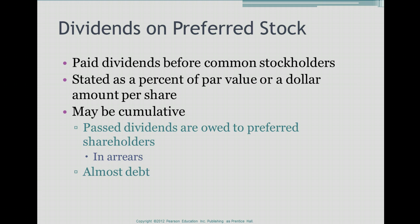For example, if a company has preferred stock on the balance sheet and they decided to pass up on paying dividends for two years, and then they pay a dividend in the third year, they have to pay the preferred stockholders three years' worth of dividends — the two years they passed up plus the year they declared the dividend.